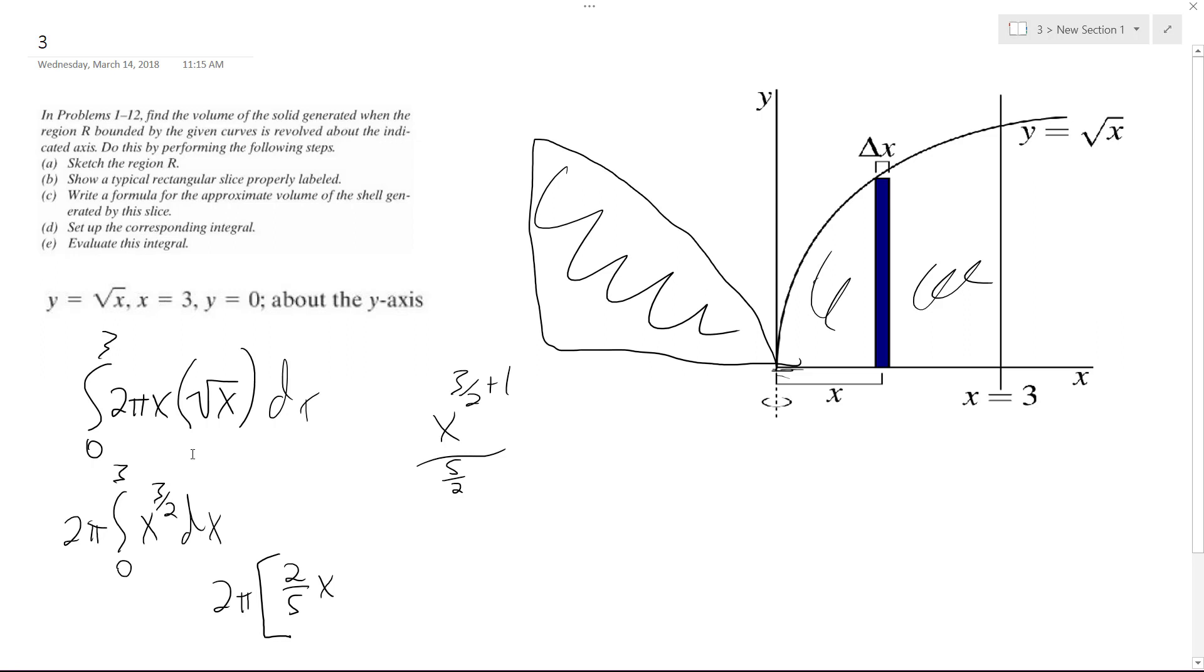Evaluating from 0 to 3, we get 2π, and then 2 fifths times 3 raised to the 5 halves. What we're going to end up with is 2 fifths times 0 raised to the 5 halves, which is 0, so we end up with 2π.